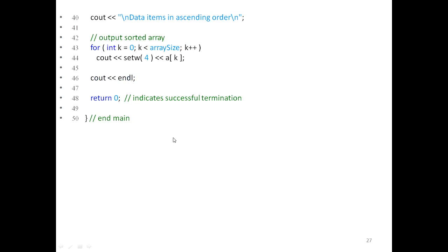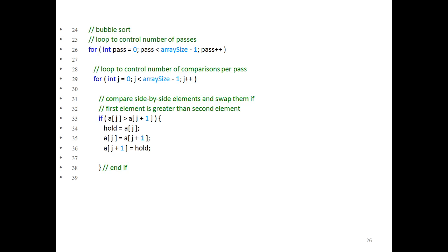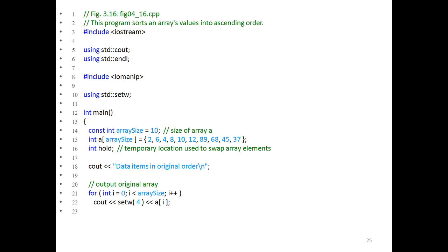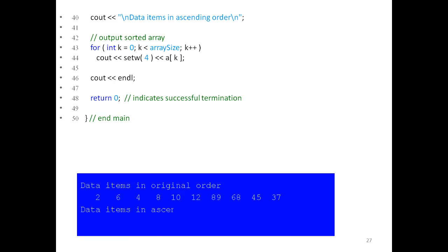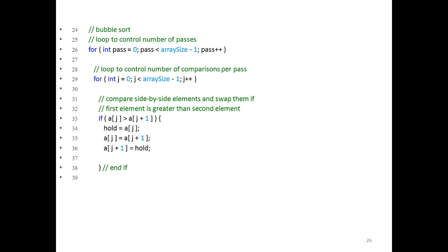Finally, the result shows the array before and after sorting. The initial unsorted values, once processed through bubble sort, are ordered as: 1, 2, 6, 8, 10, 12, 37, 45, 60, 80, 89 — sorted in ascending order. That's the algorithm used in bubble sort.